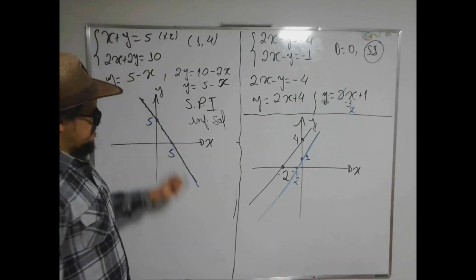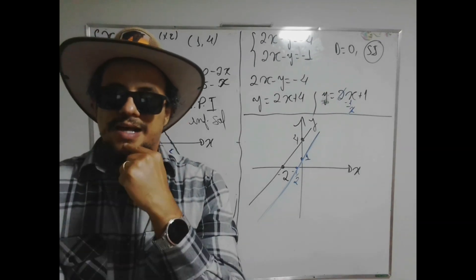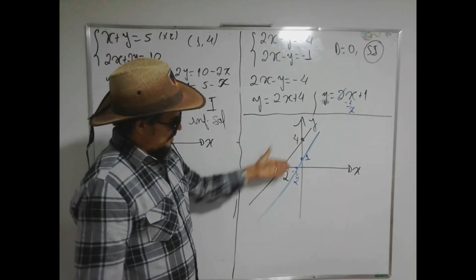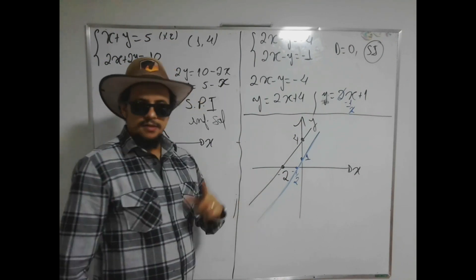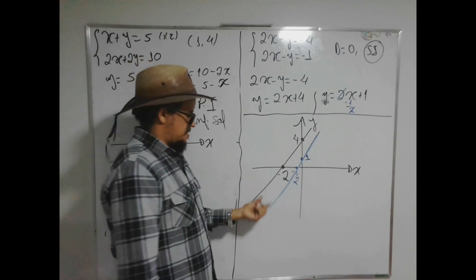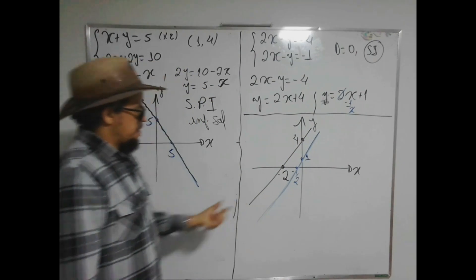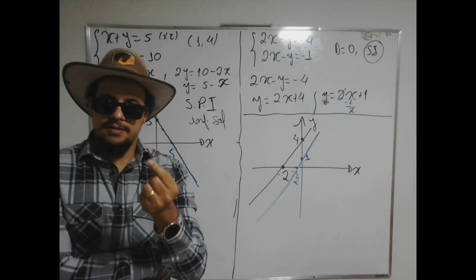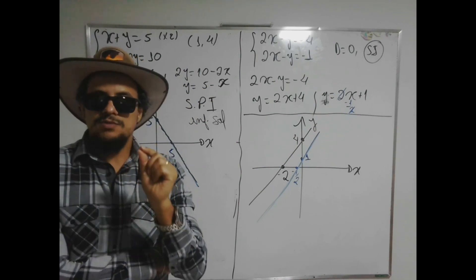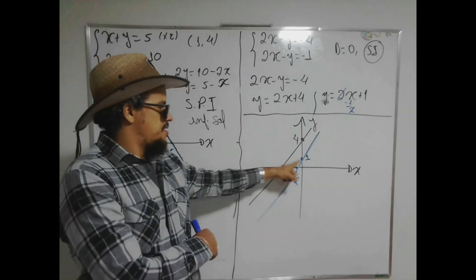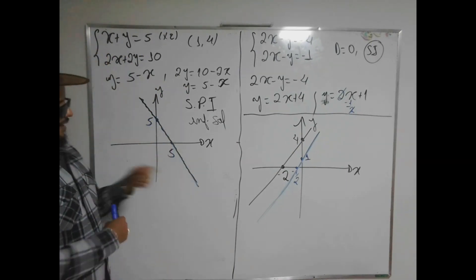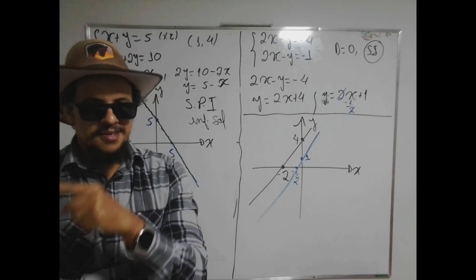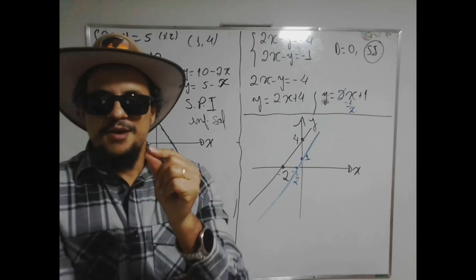Nós temos aqui dois casos de paralelismo: as retas paralelas propriamente ditas — a distância entre elas é sempre a mesma — e um outro caso de retas paralelas chamadas coincidentes, onde a distância é zero e também constante. Sistema impossível corresponde a retas paralelas; SPI corresponde a retas coincidentes; e SPD corresponde a retas que se interceptam em um único ponto.